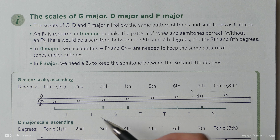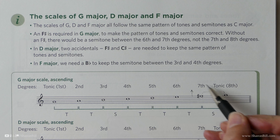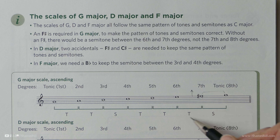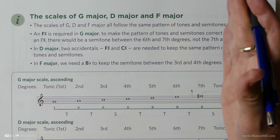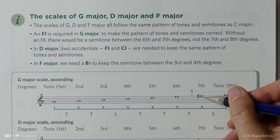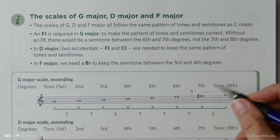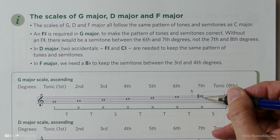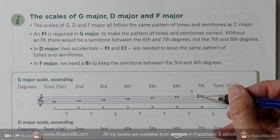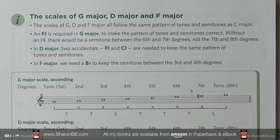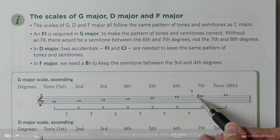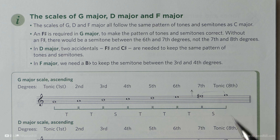So to get the major scale pattern from G to G, we must remember that the F must be sharpened. Looking at that on a piece of paper, we can see here is our one, two, three, four, five, six — seven has been raised to make it a full tone, and then that gives us the semitone between seven and eight. So G major must always have an F sharp.